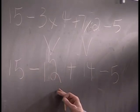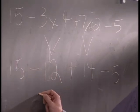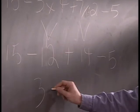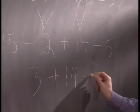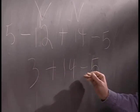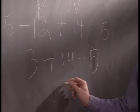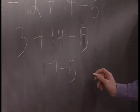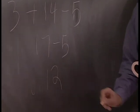So we'd have 15 minus 12. 3. If it helps you to keep organized, just rewrite the whole problem again. 3 plus 14. 17. Minus 5. 12. So our final answer is 12.